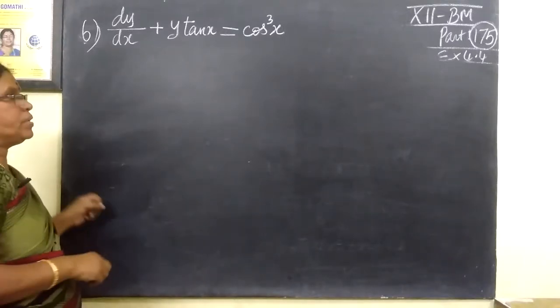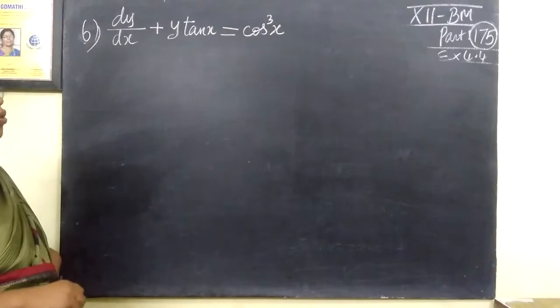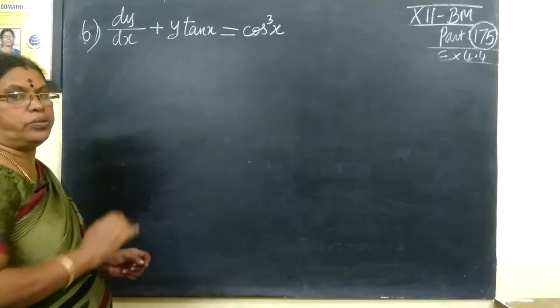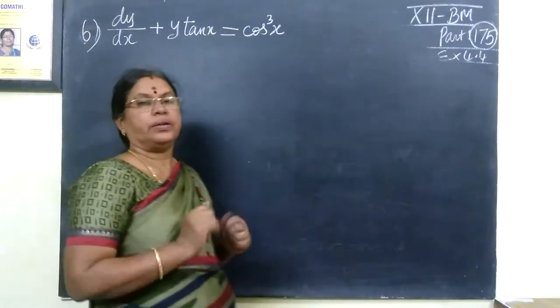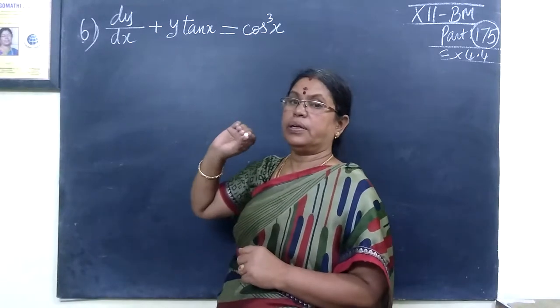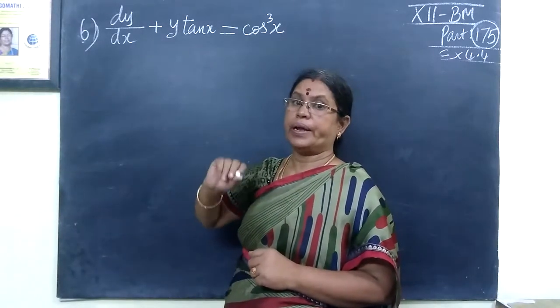So, next one is Exercise 4.4 Business Math. Now, suppose this is the n method. Then, this represents the n equation, n type of thing.